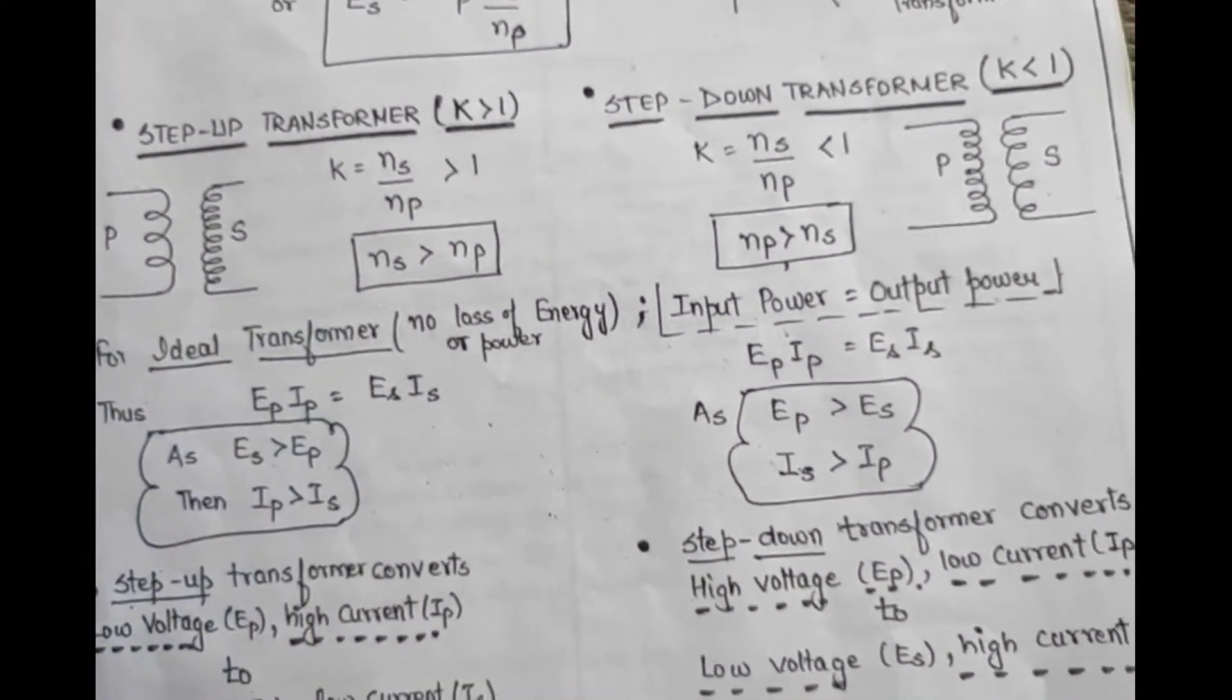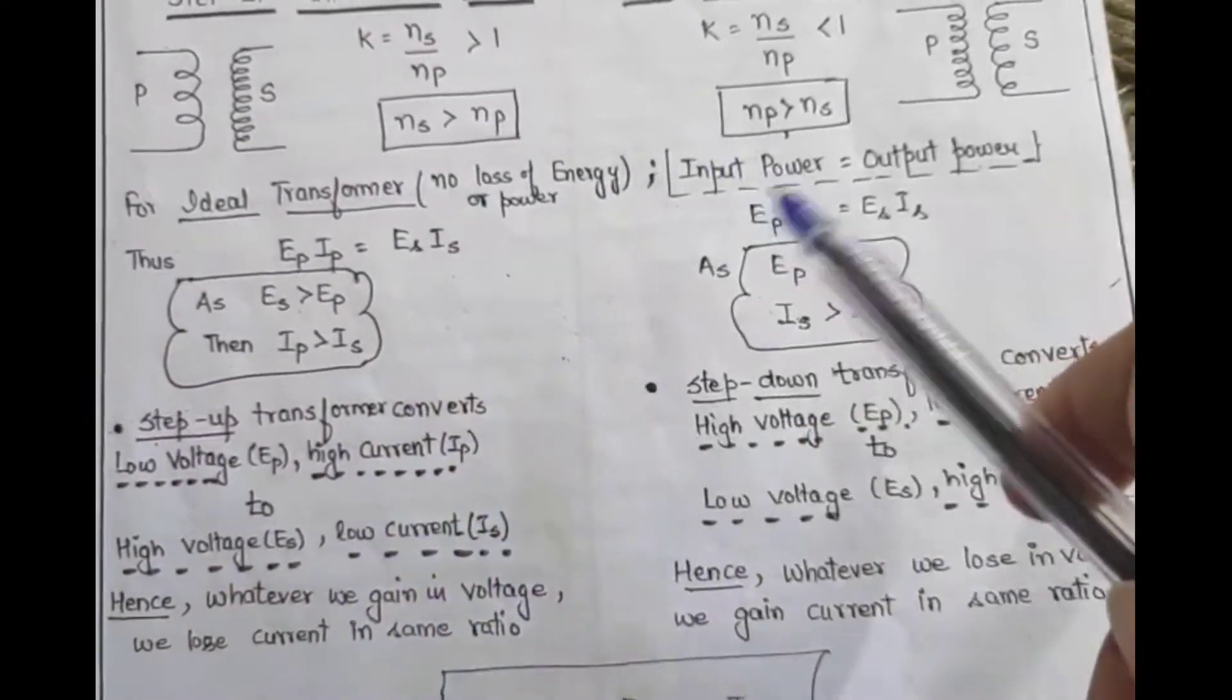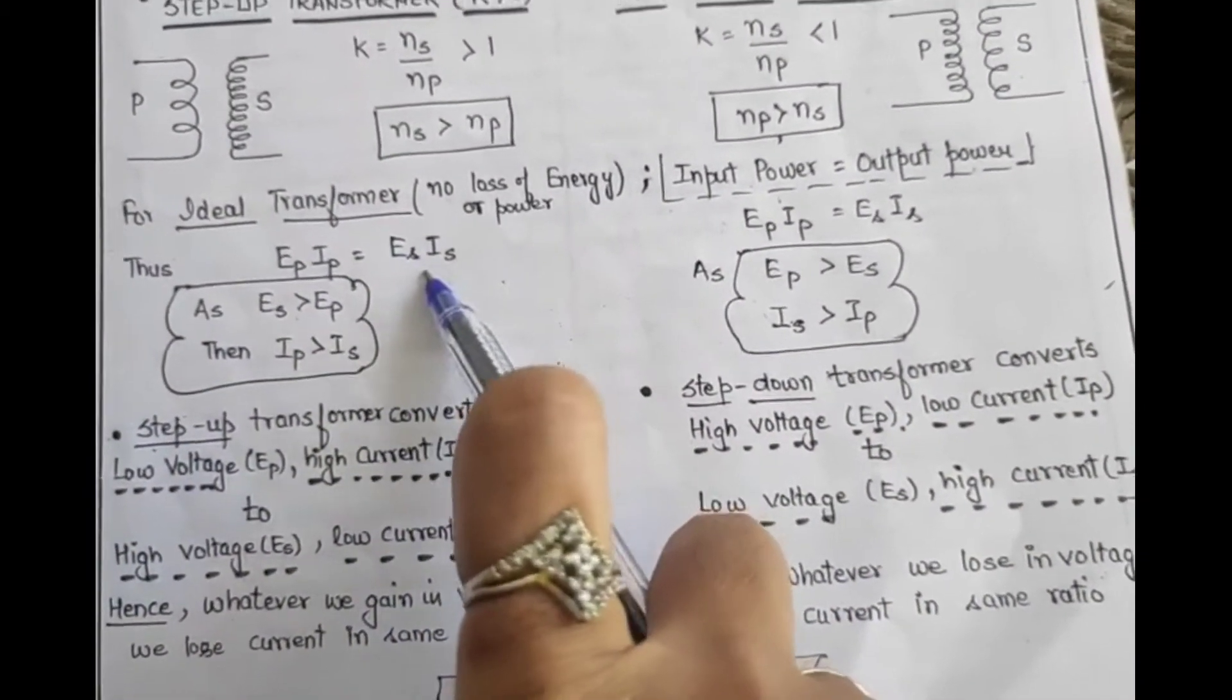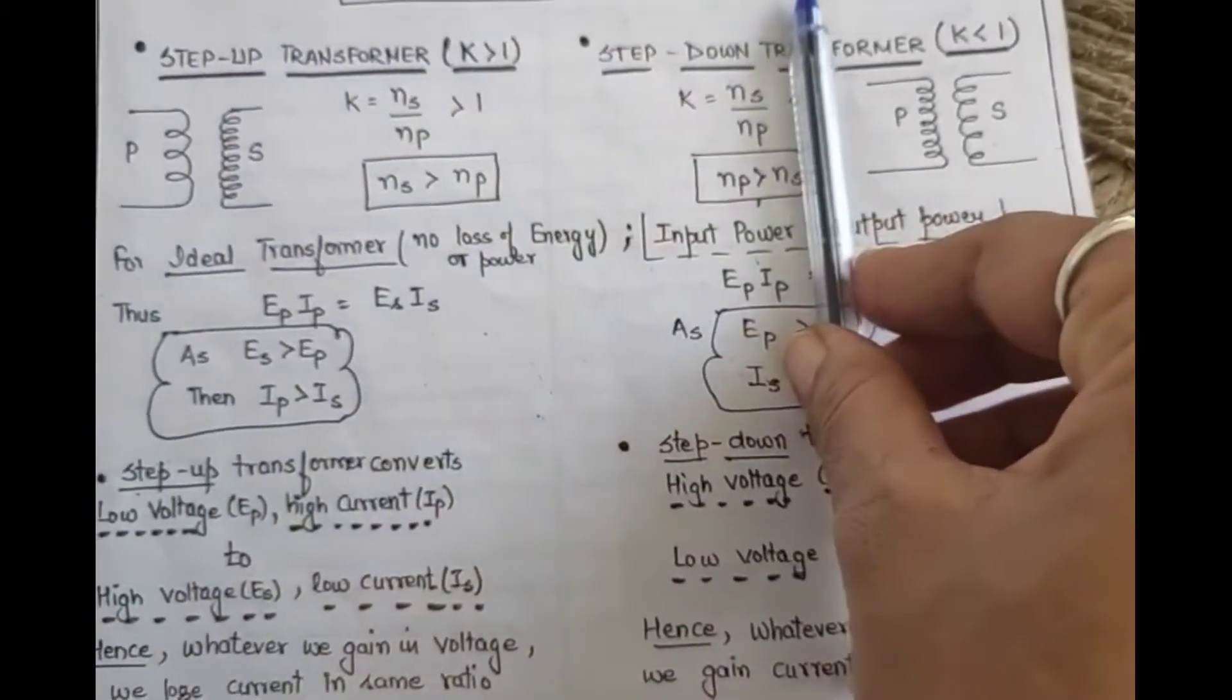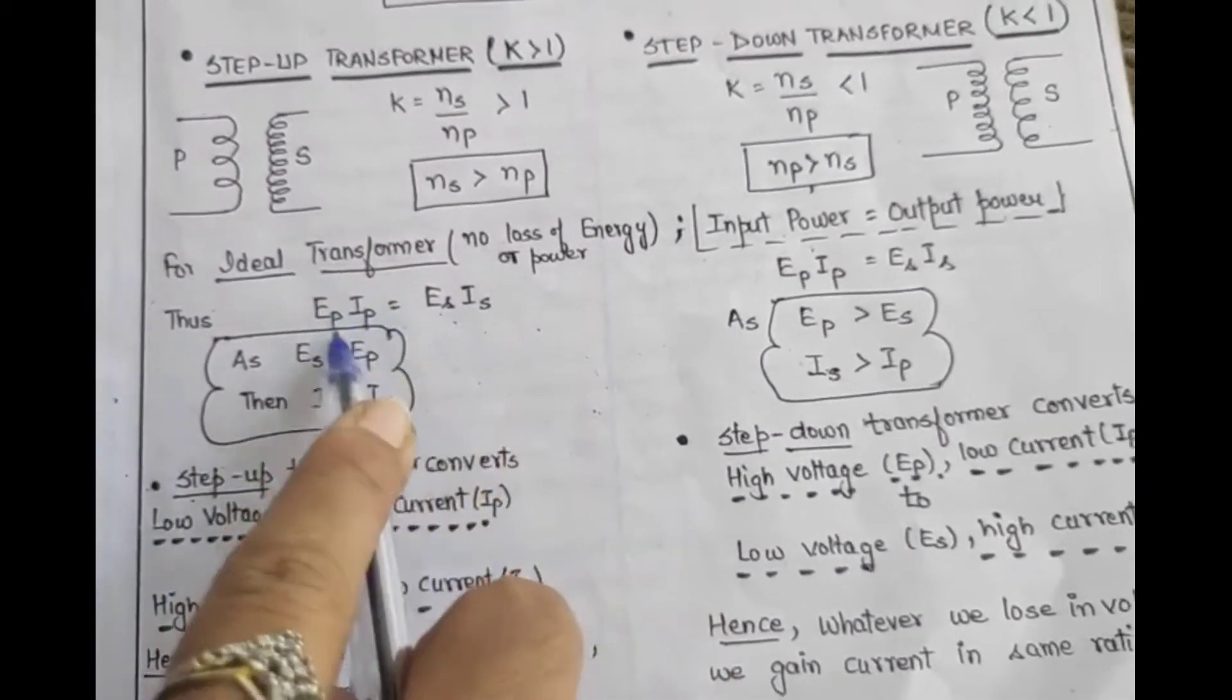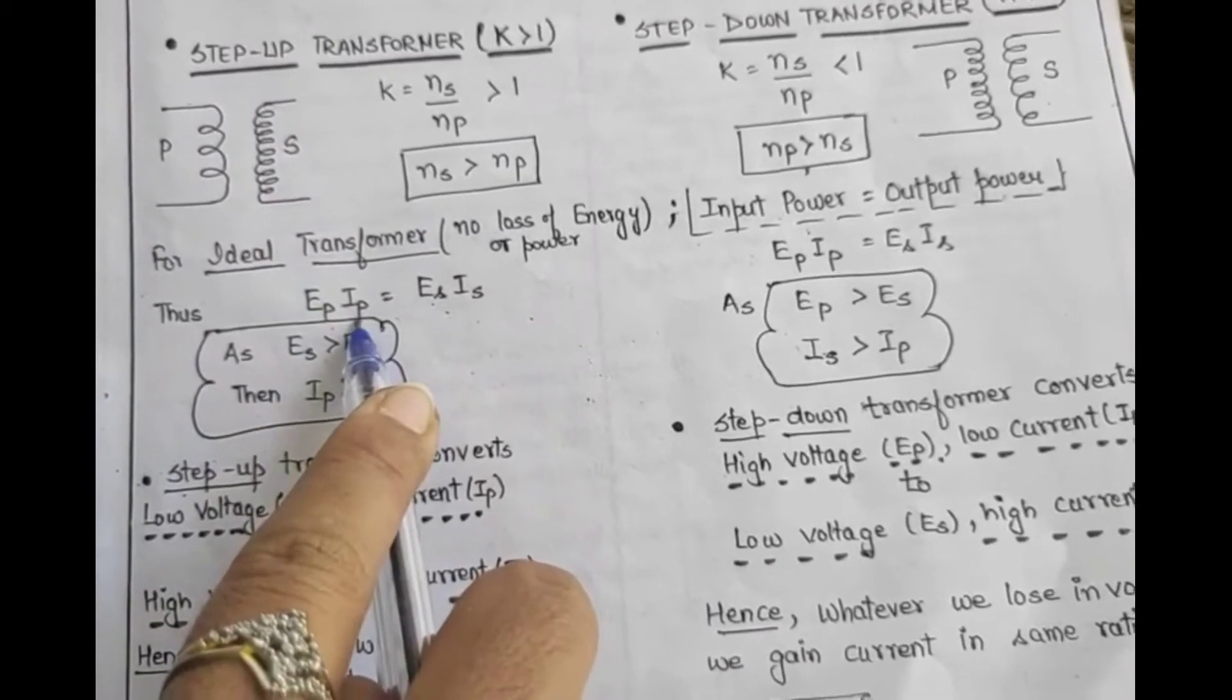Figure is shown here. We took ideal transformer, so there will be no energy losses. Energy losses and power losses are the same. This means input power and output power will be the same. Not to worry. EP IP = ES IS. This column is for step-up, this column is for step-down.